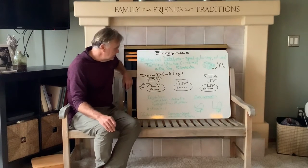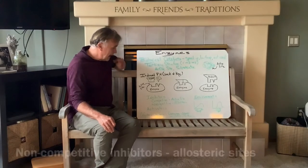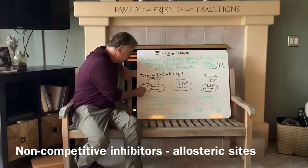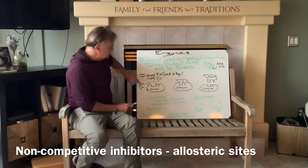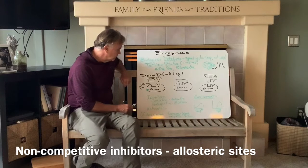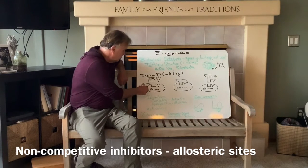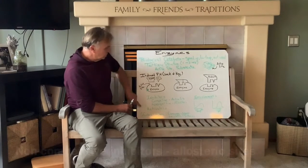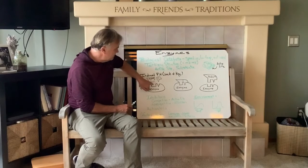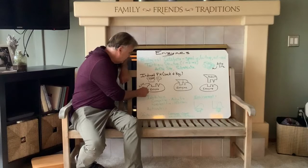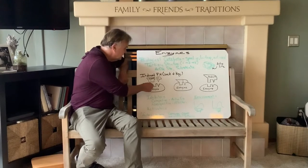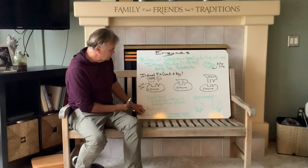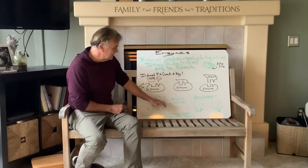There are also non-competitive inhibitors that hit what are called allosteric sites — a site somewhere else on the enzyme. Locking onto that allosteric site causes a conformational change in the enzyme so it no longer works, effectively deactivating it. You can also have activators, which work similarly by hitting an allosteric site and changing the active site so that it becomes functional.